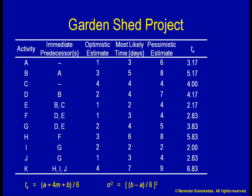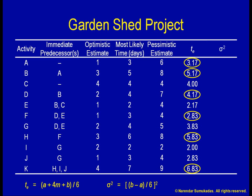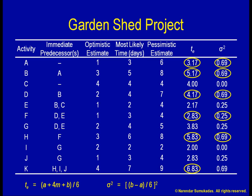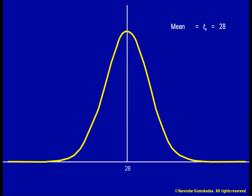The number 28 is made up of the individual time estimates of the critical path activities A, B, D, F, H, and K. So the variance surrounding the number 28 can be calculated as the sum of the variances of these individual time estimates. Adding up these variances, we have 0.69 + 0.69 + 0.69 + 0.69 + 0.25 + 0.69 + 0.69, which comes to 3.722. Therefore, the standard deviation of this normal distribution is the square root of 3.722, which is 1.93.